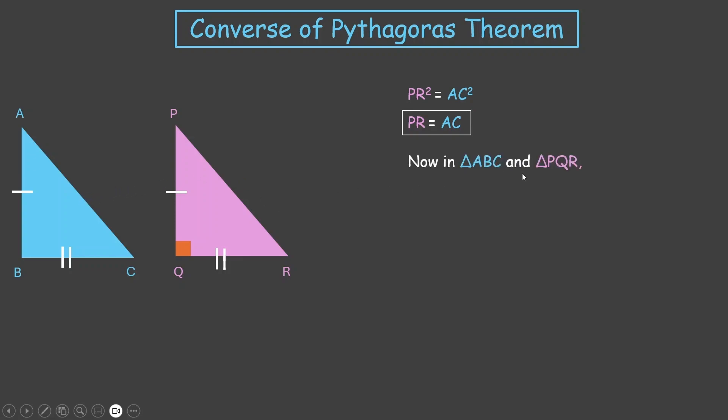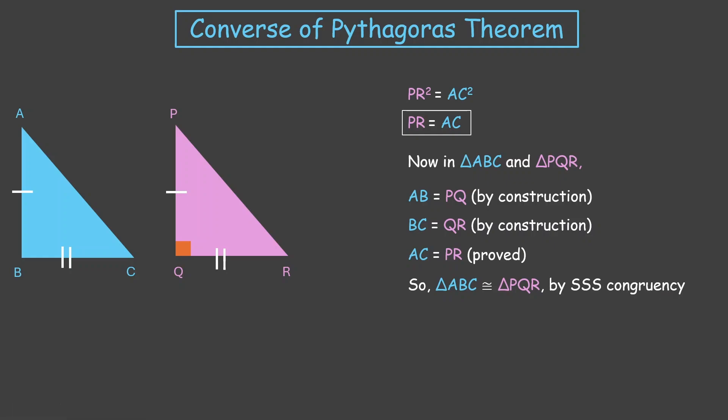Now, if we look at these two triangles, the blue one and the pink one, we'll see that AB equals PQ by construction, BC equals QR by construction, and AC equals PR, which we just proved. So these two triangles are congruent by SSS congruency. This gives us that angle B equals angle Q by CPCT—corresponding parts of congruent triangles.